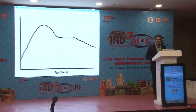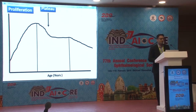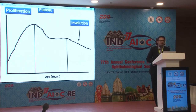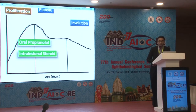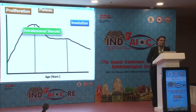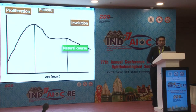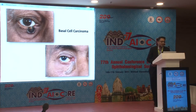The natural history of capillary hemangioma shows a growth curve with a stage of proliferation leading to involution. When seeing a patient, try to identify which phase they are in. In proliferation there is active growth, so oral propranolol and intralesional or oral steroids work well. But in the plateau or involution stage, propranolol may not work. Sometimes it's best not to treat and just observe — it will involute on its own.